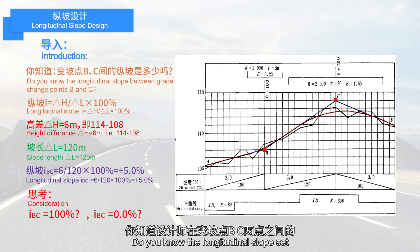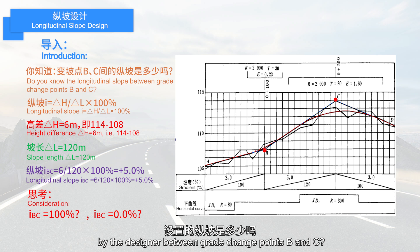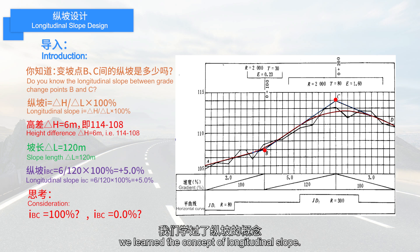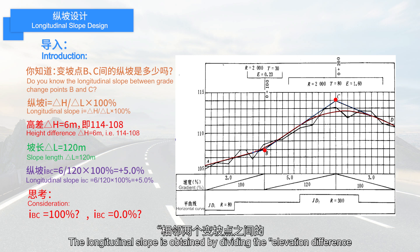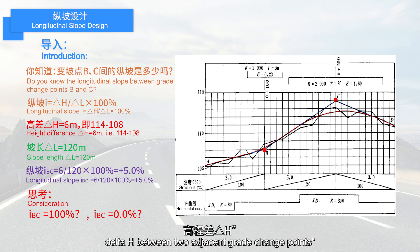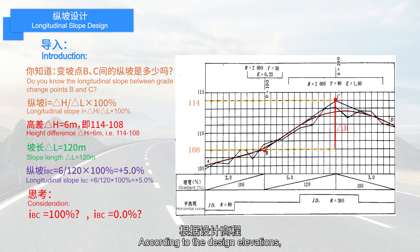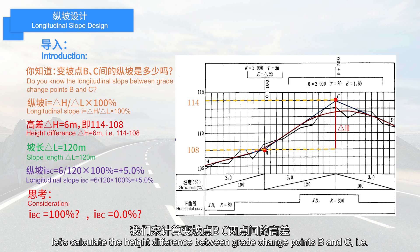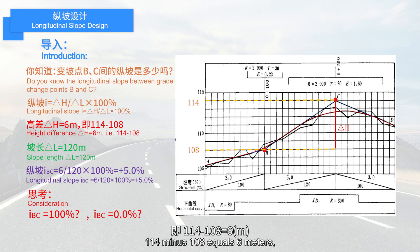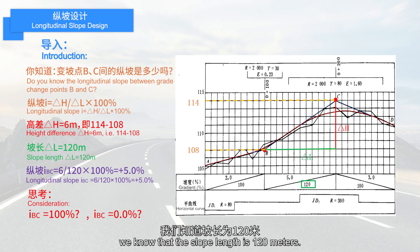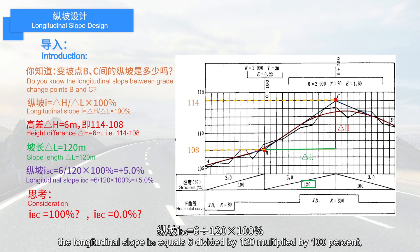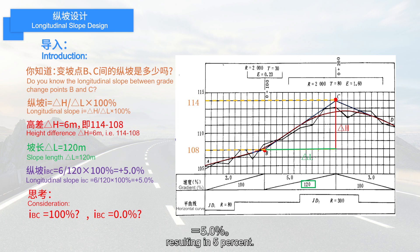Do you know the longitudinal slope set by the designer between grade change points B and C? Last class, we learned the concept of longitudinal slope. Now let's review it. The longitudinal slope is obtained by dividing the elevation difference between two adjacent grade change points by the slope length and multiplying by 100%. According to the design elevations, the height difference between grade change points B and C is 114 minus 108, which equals 6 meters. The slope length is 120 meters. Therefore, the longitudinal slope equals 6 divided by 120 multiplied by 100%, resulting in 5%.